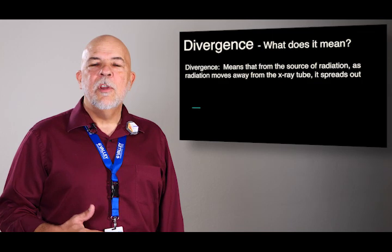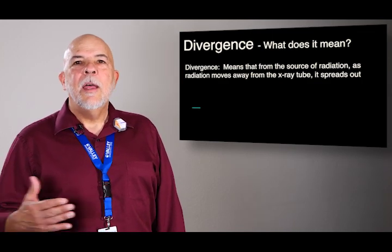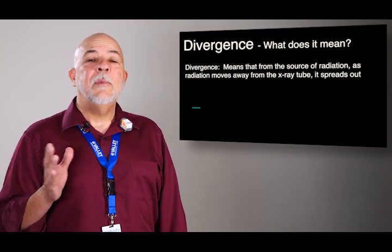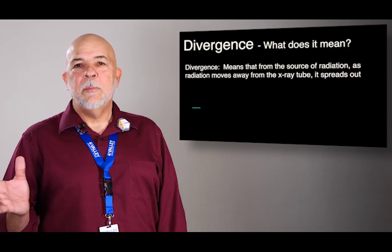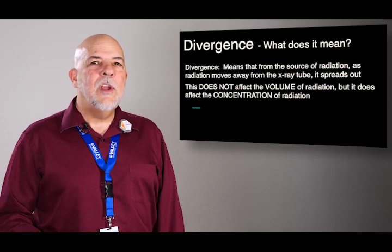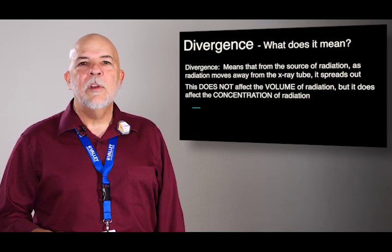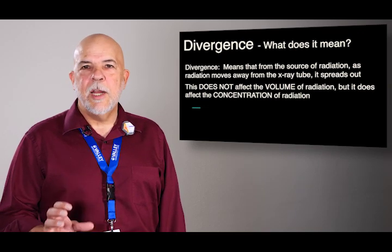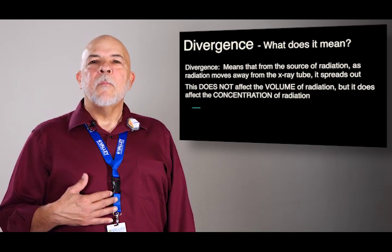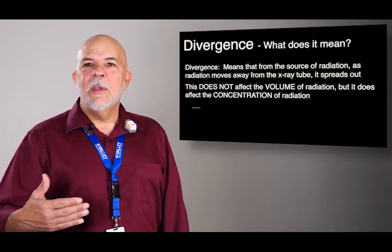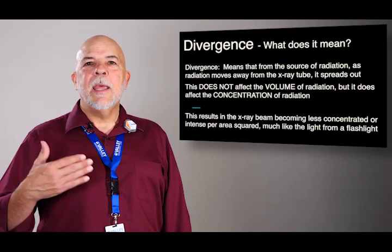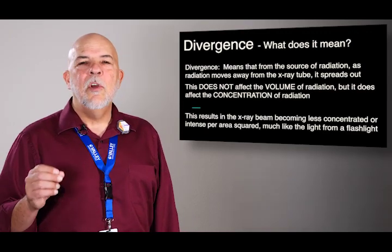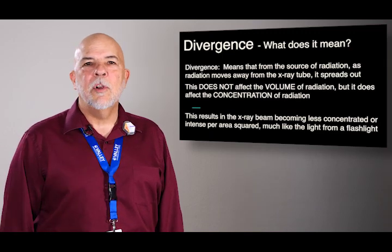From the source of radiation to your receptor, the beam diverges or spaces out. So this does not affect the volume of radiation, but it does affect the concentration of radiation. So as you go further out, kind of like a flashlight, it gets dimmer and dimmer, but there's no less light. It's just spread out over a larger area.